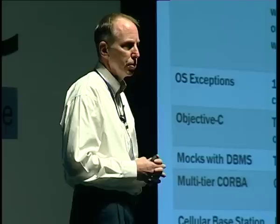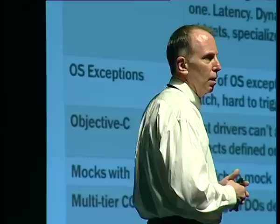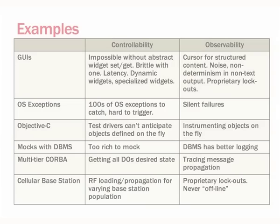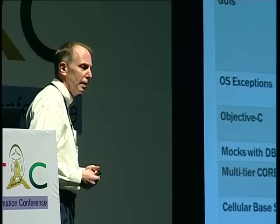Another system I worked on required driving many exceptions out of the operating system — a Unix platform with hundreds of exceptions the system under test had to catch. The issue was whether the application could actually catch them and do something reasonable. We had to generate them first — how do you force exceptions? Some things were difficult to trigger. Another interesting observability issue was silent failures. Even if you could force the exception, the application would often just ignore it, giving us no way of knowing whether anything had actually occurred.